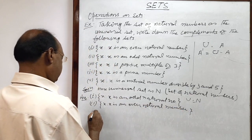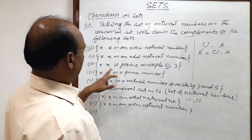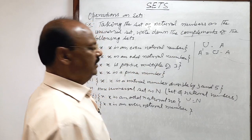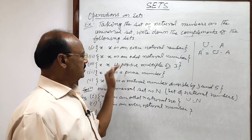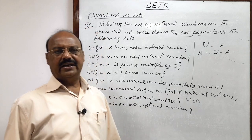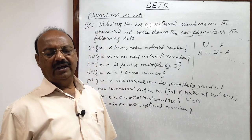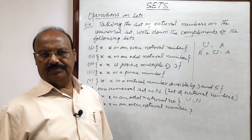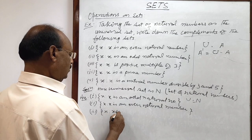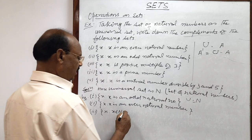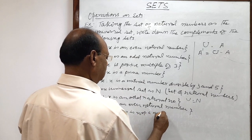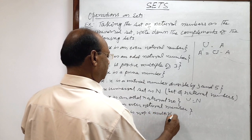Question three: the set consists of x such that x is a positive multiple of three. If multiples of three are removed from the natural numbers, what remains are the non-multiples. So the answer is: {x : x belongs to the set of natural numbers and x is not a multiple of 3}.